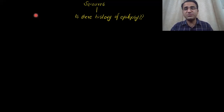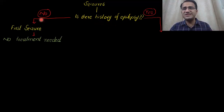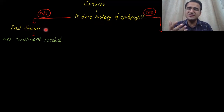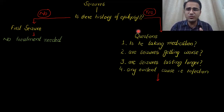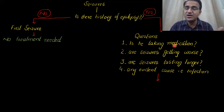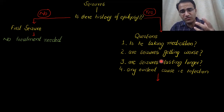When approaching a patient with seizures, first ask whether they have a history of recurrent seizures or epilepsy. If it was the first time, no treatment is required — just investigate why it happened. If the patient has recurrent seizures, ask whether they are on any treatment, and if so, whether the seizures are getting worse or lasting longer.